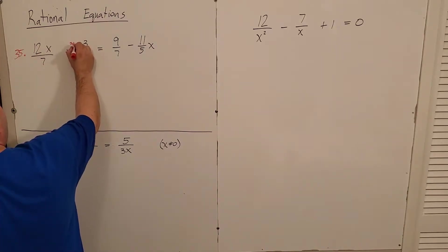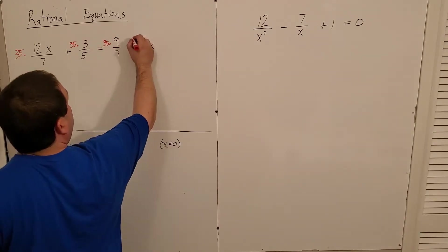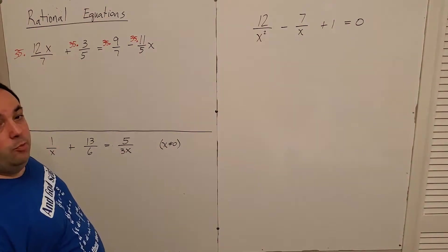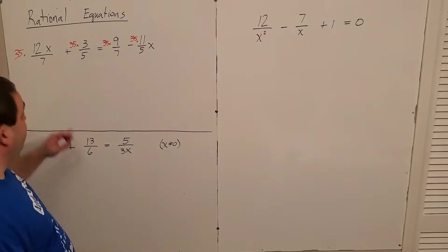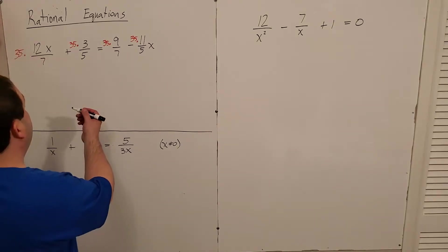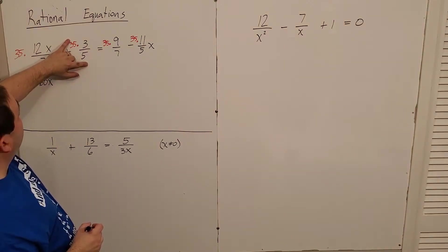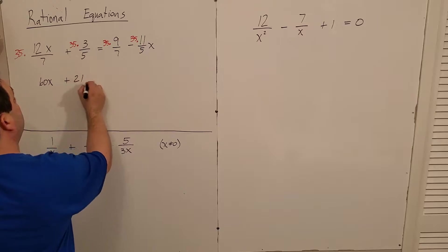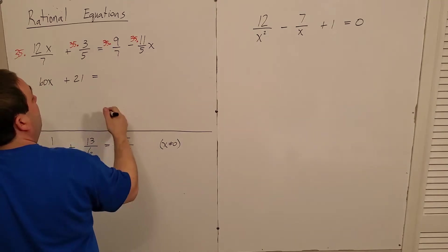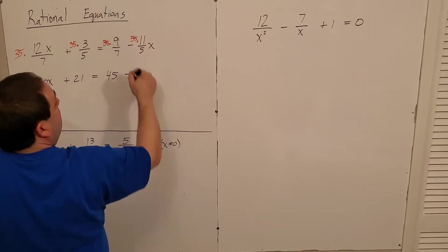We'll divide by both equally and evenly. So if I multiply by 35, that will get rid of my denominator problem. Do the divisions first. 35 divided by 7 is 5 times 12 is 60. So I have 60x. 35 divided by 5 is 7 times 3 is 21. 35 divided by 7 is 5 times 9 is 45. And then 35 divided by 5 is 7 times 11. So I have 77x.